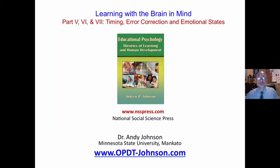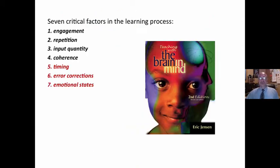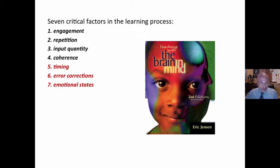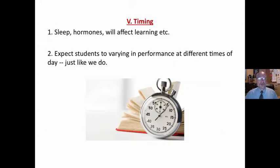Andy Johnson, Minnesota State University. Learning with the brain and mind — brain-based learning: timing, error correction, emotional states. This is the last in our three-part series using the book 'Teaching with the Brain and Mind' by Eric Jensen — highly recommended. Seven critical factors. This video looks at timing, error correction, and emotional states.